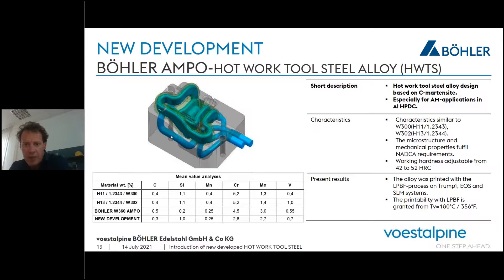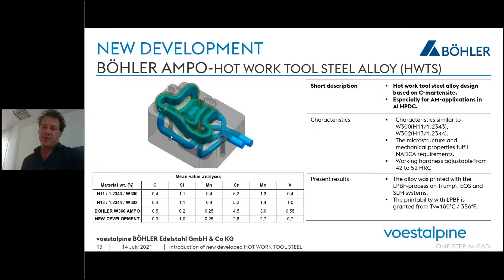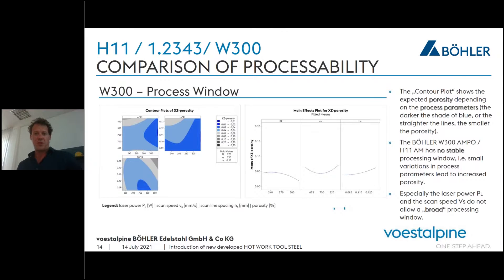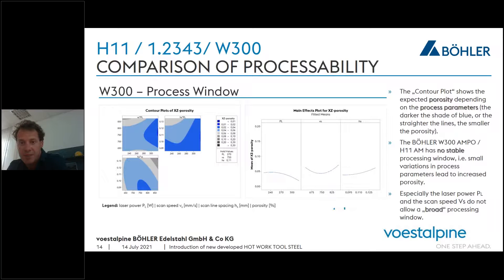Key elements of the new steel: carbon content is 0.3 weight percent, which is lower compared to H11 and H13 — this is important for processability. Molybdenum content is nearly 3 weight percent, which is important for mechanical properties. The microstructure and mechanical properties fully meet NADCA requirements. Adjustable working hardness is between 42 and 52 HRC. The alloy was printed successfully with multiple machines: Trumpf, EOS, and SLM Solutions. Printability in laser powder bed fusion is guaranteed from 180°C preheat.